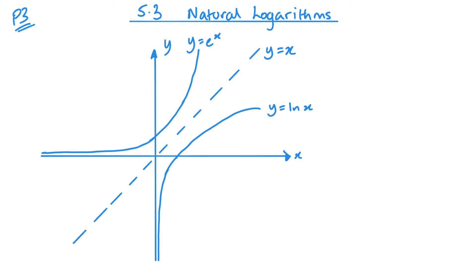Now we've already seen the graph of y equals e to the x, and the graph of y equals ln x is the inverse of this. So it's a reflection in the line y equals x.